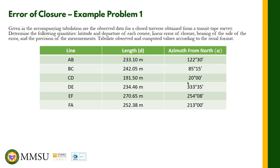For example, if we multiply 233.10 times the cosine of 122°30', it will give us a negative answer — meaning the latitude will be negative. For the departure, we directly use the sine of the azimuth angle. We do not look at whether north or south, east or west. This is only valid when the given angle is azimuth from north.